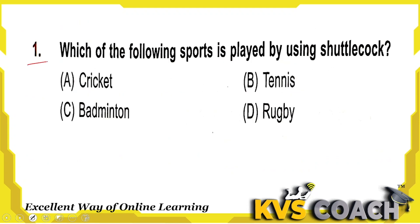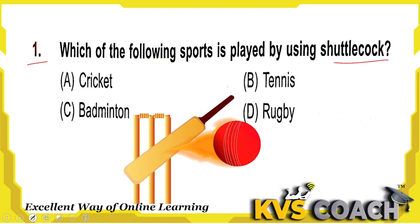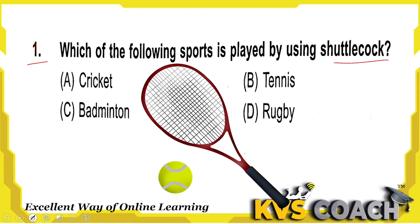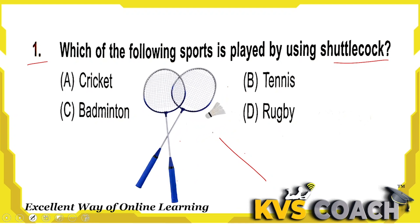First question: which of the following sports is played by using a shuttlecock? Option A is cricket — for cricket we use bat, ball and wickets. Option B is tennis — for tennis we use a racket and a tennis ball. Third one is badminton — for badminton we use a shuttlecock. The right answer for this question is option C, badminton.